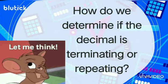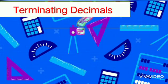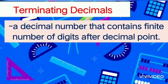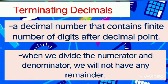How do we determine if the decimal is terminating or repeating? Let us define what is a terminating decimal. A terminating decimal is a decimal number that contains a finite number of digits after the decimal point. When we divide the numerator and denominator, we will not have any remainder.